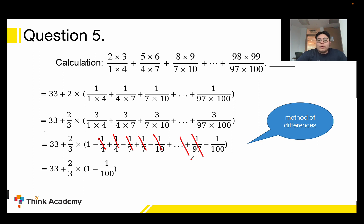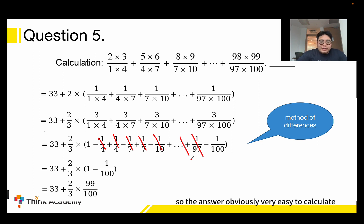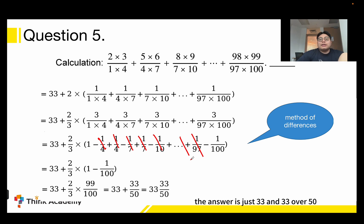So the expression simplifies to 33 + (2/3) × (1 − 1/100). The answer is clearly 33 + (2/3) × (99/100) = 33 + 33/50.